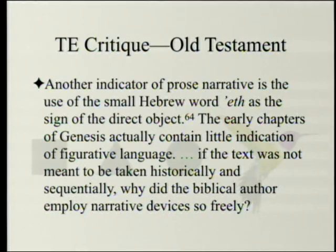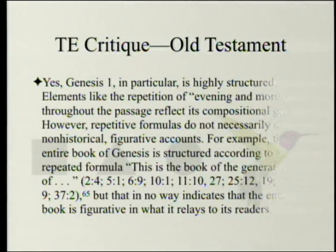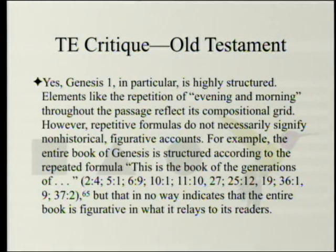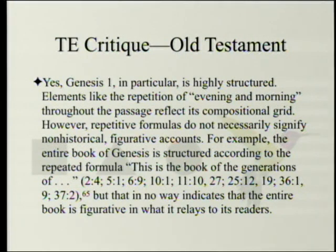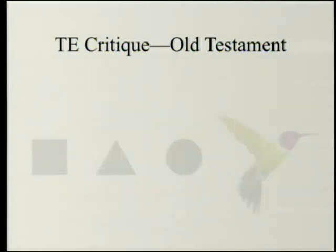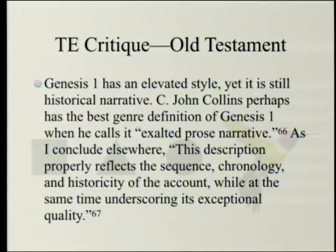Another indicator of prose narrative is the use of the small Hebrew word eth as the sign of the direct object, which isn't required in poetry. The early chapters of Genesis contain little indication of figurative language. If the text was not meant to be taken historically and sequentially, why did the biblical author employ narrative devices so freely? Yes, Genesis 1 is highly structured — elements like the repetition of 'evening and morning' reflect its compositional grid — but repetitive formulas do not necessarily signify non-historical figurative accounts. For example, the entire book of Genesis is structured according to the repeated formula 'this is the book of the generations of,' appearing eleven times, but that does not indicate the entire book is figurative.